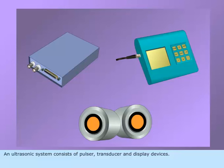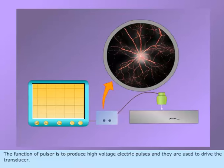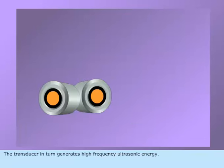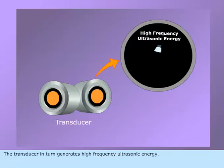An ultrasonic system consists of a pulsar, transducer, and display devices. The function of the pulsar is to produce high voltage electric pulses which are used to drive the transducer. The transducer in turn generates high frequency ultrasonic energy.